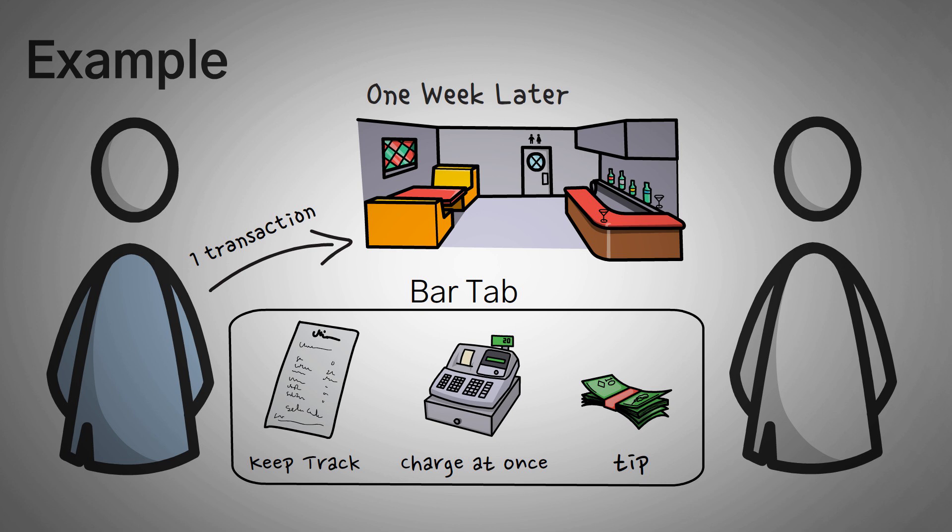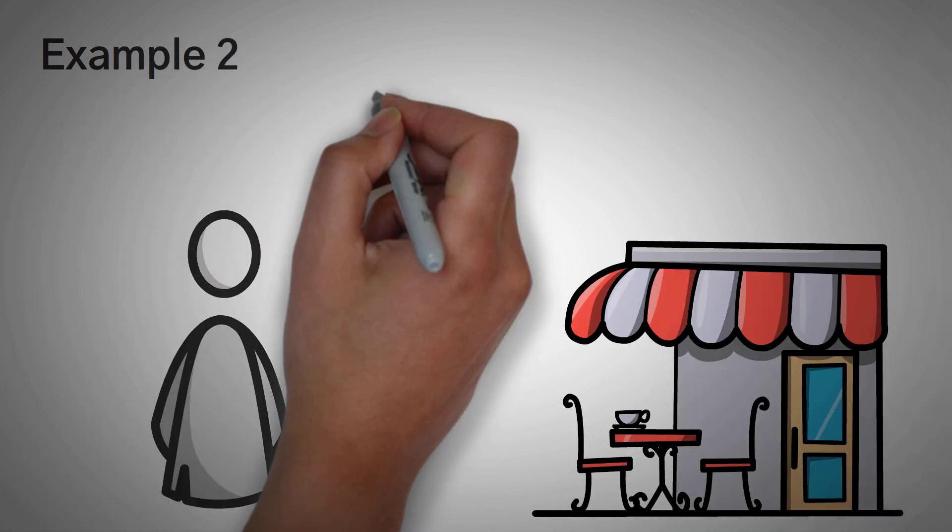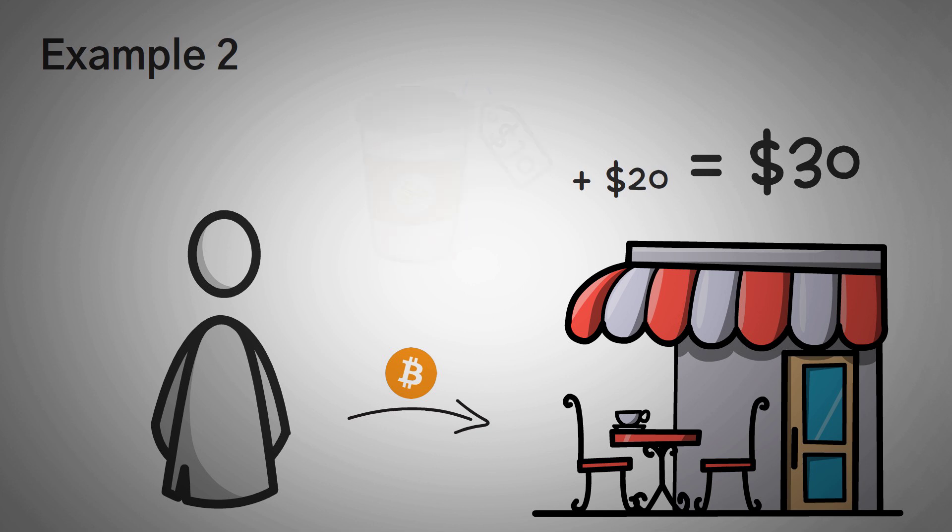Alright, that example only used two participants, you and the barkeep. Let's go over another example with a few different participants, because that's the benefit of using the Lightning Network. Let's say I come into a coffee shop and I buy a $10 coffee, because some big name brands out there apparently like to use gold in their espresso, and I decide to pay with Bitcoin. Well, because of this, the fee is $20, so I pay $30 for my $10 coffee.